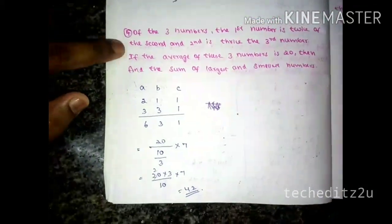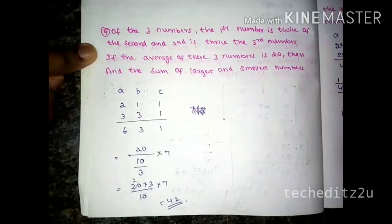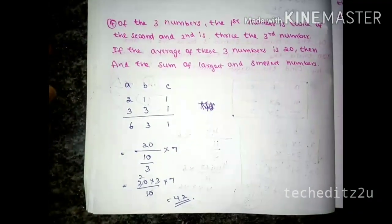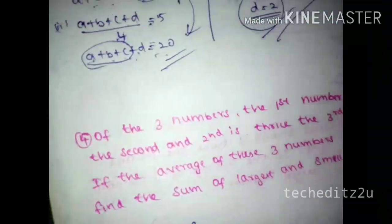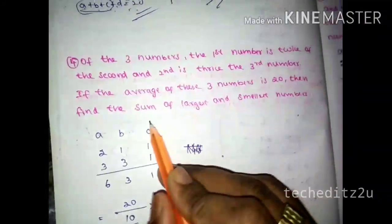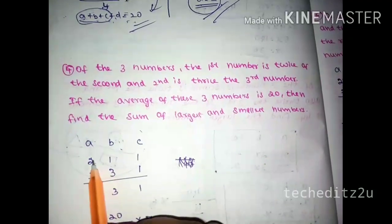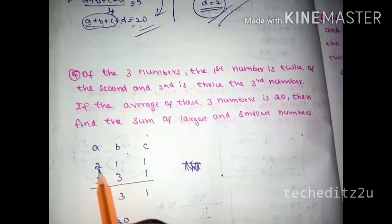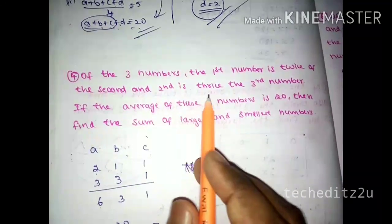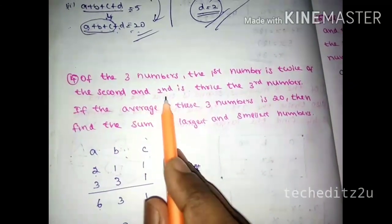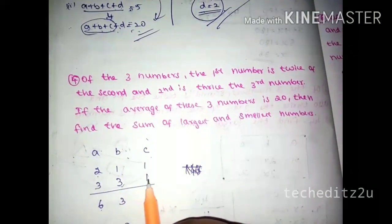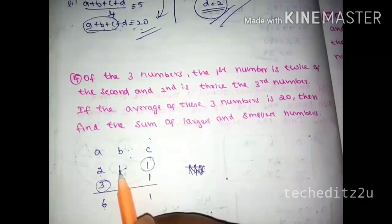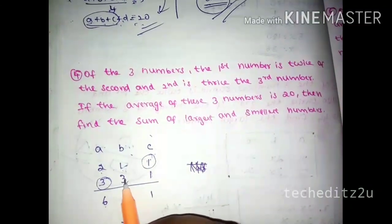If the average of three numbers is 20, find the sum of the largest and smallest number. This is the same model. Three numbers: a, b, c. The first is twice the second. So a equals 2b. The second is one-third of the third. And the second is one-third of the third.